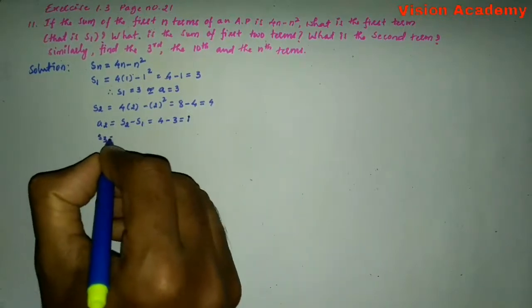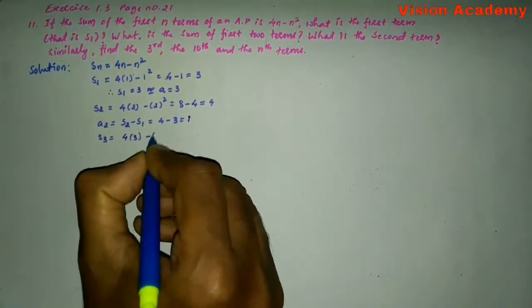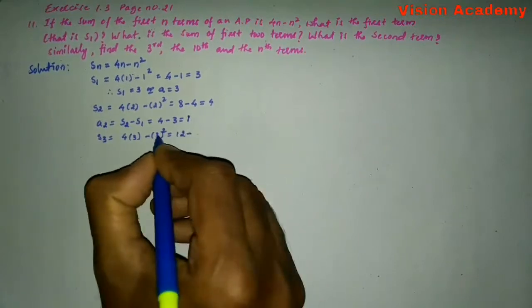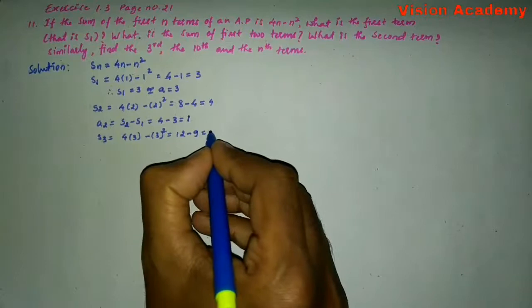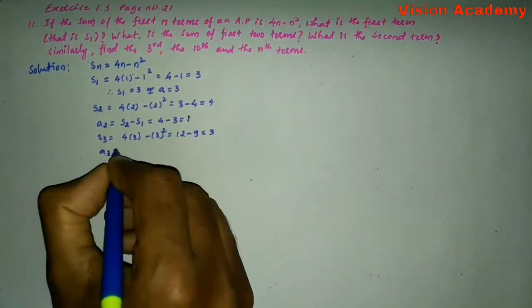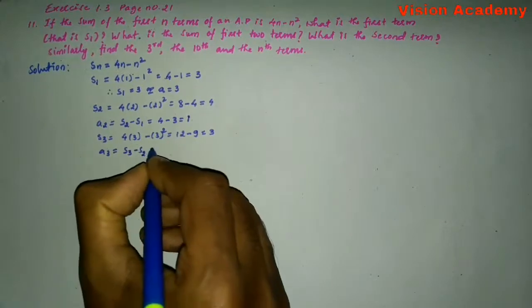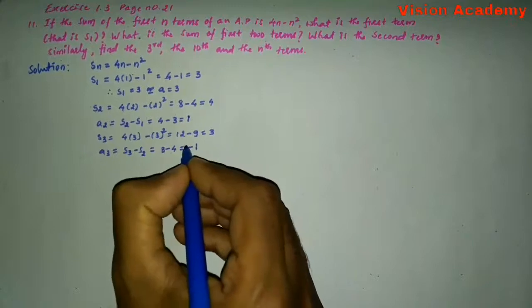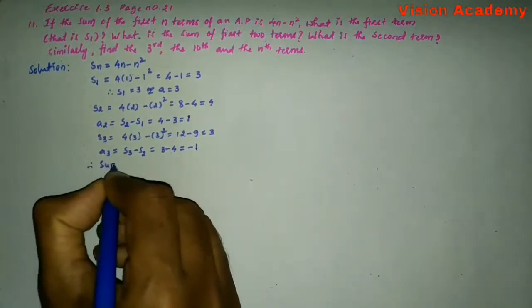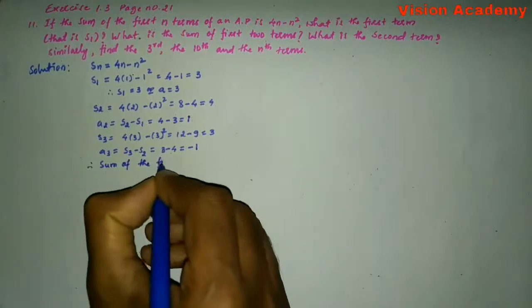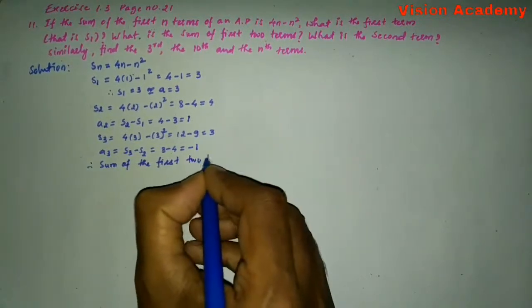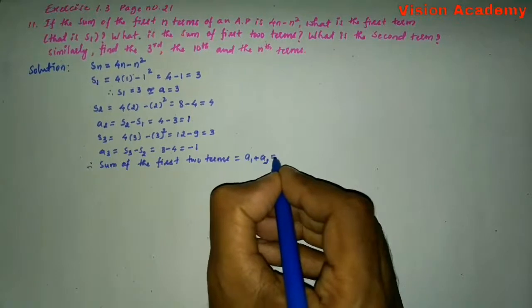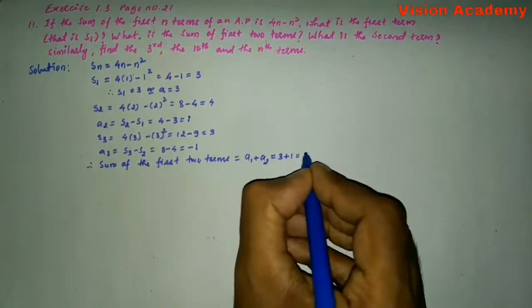S3 is equal to 4 into 3 minus 3 whole square, which is equal to 12 minus 9, which is equal to 3. A3 is equal to S3 minus S2, which is equal to 3 minus 4, equal to minus 1. Therefore, the sum of the first two terms is equal to A1 plus A2, which is 3 plus 1, equal to 4.